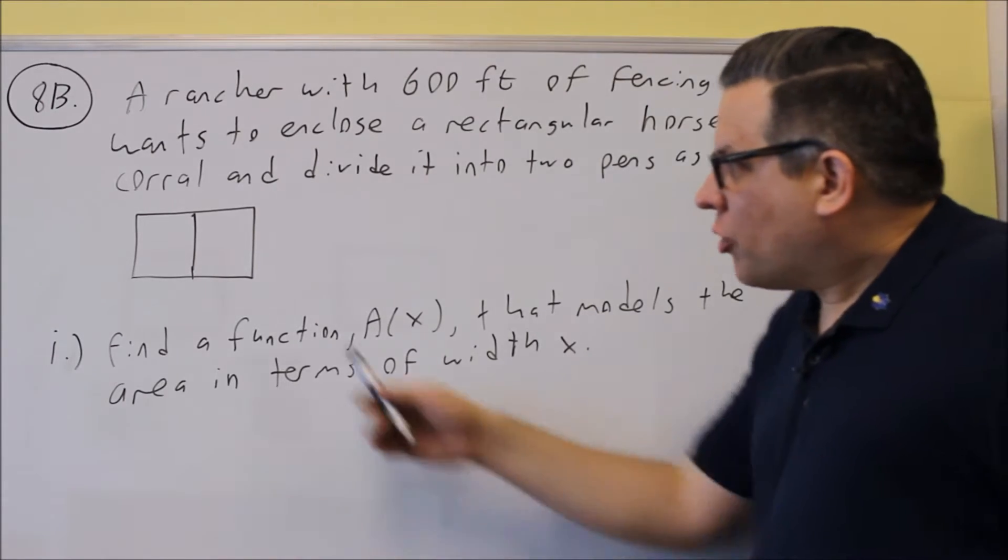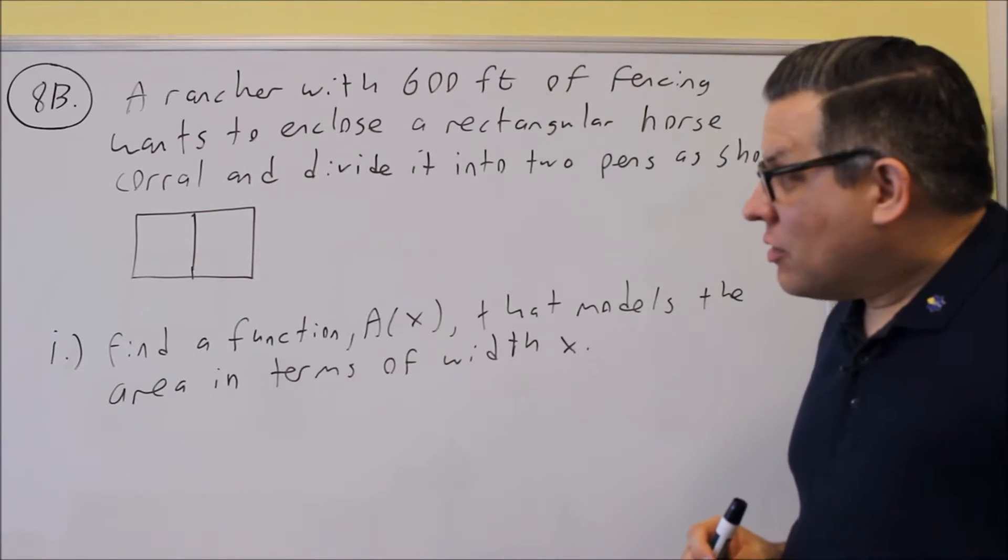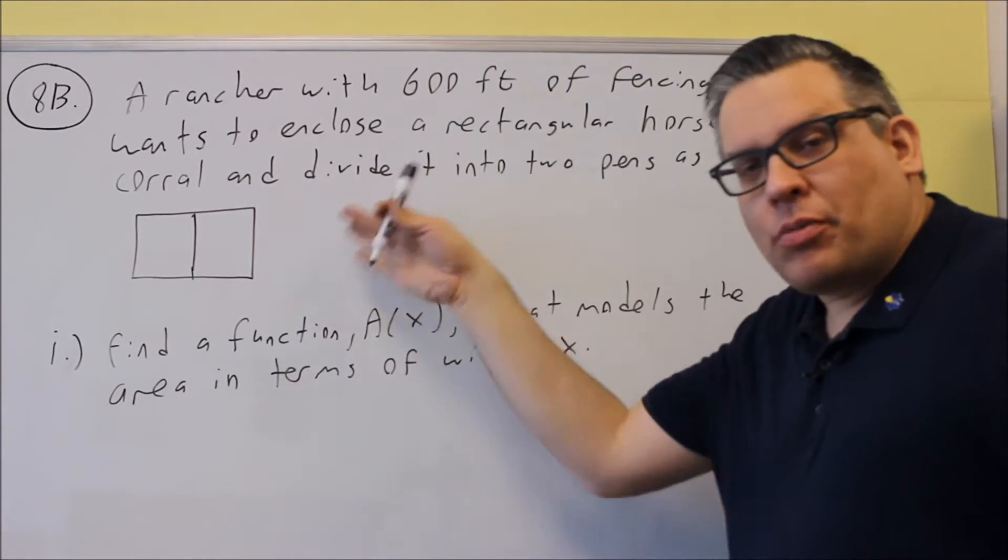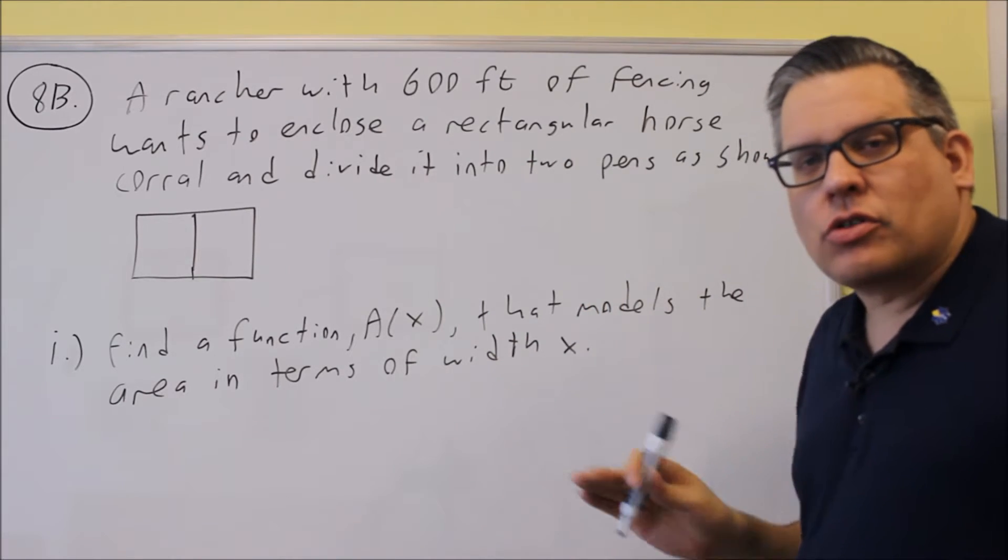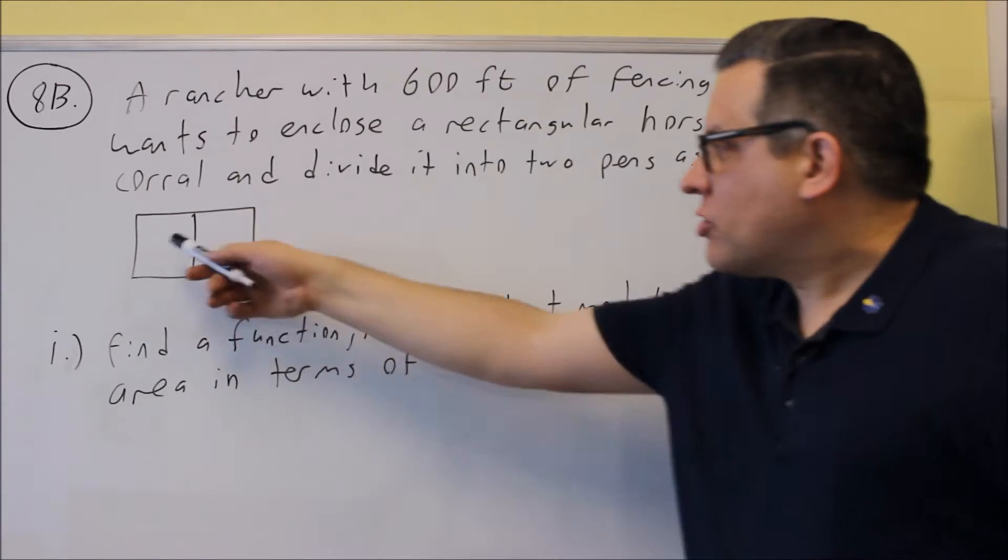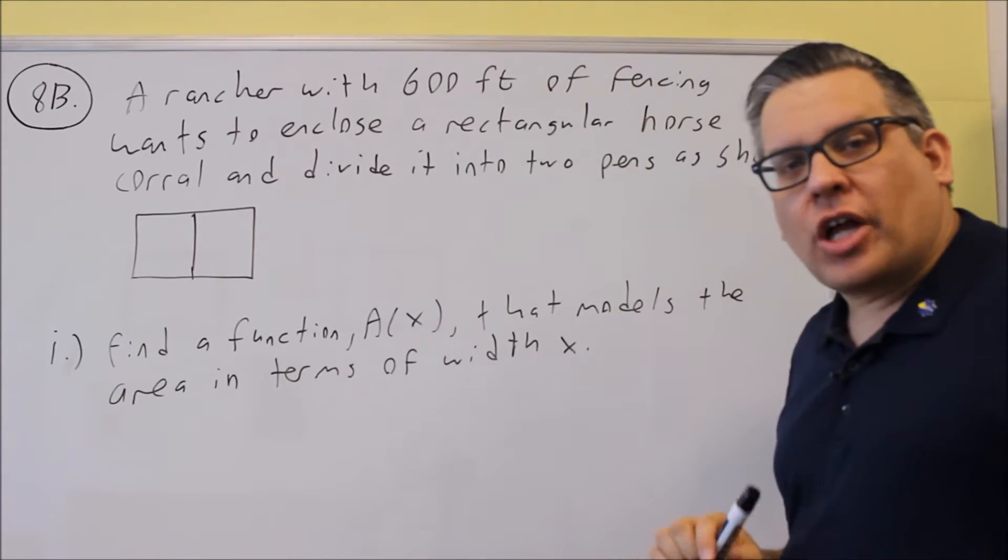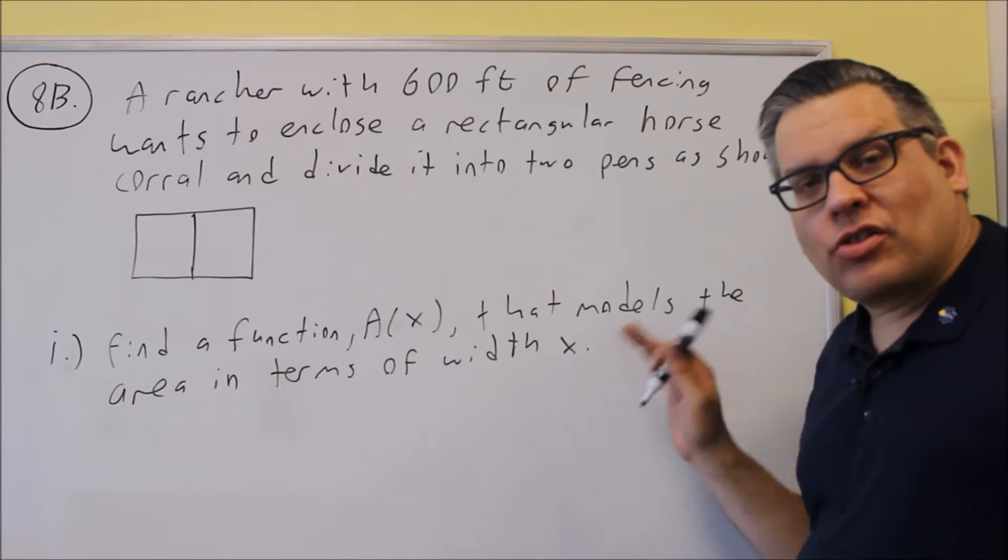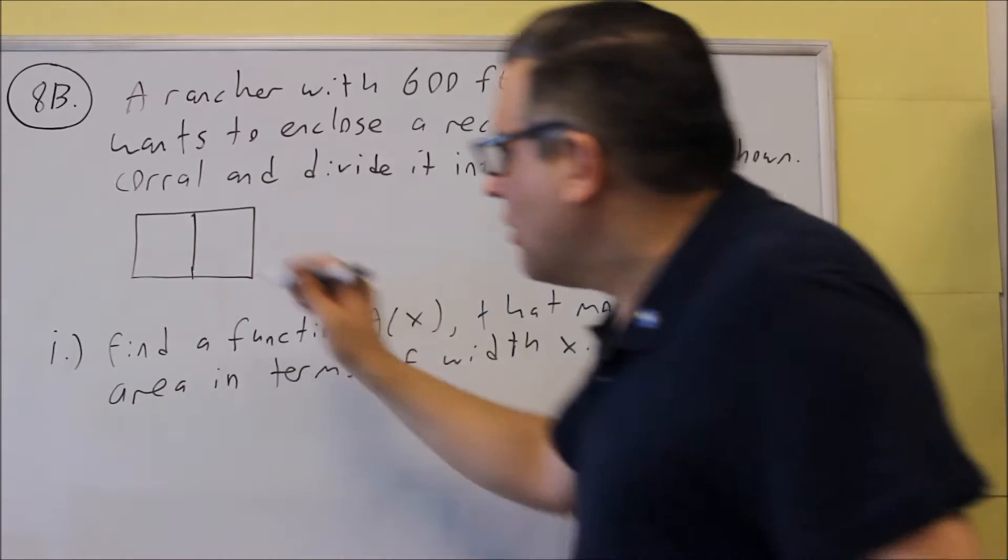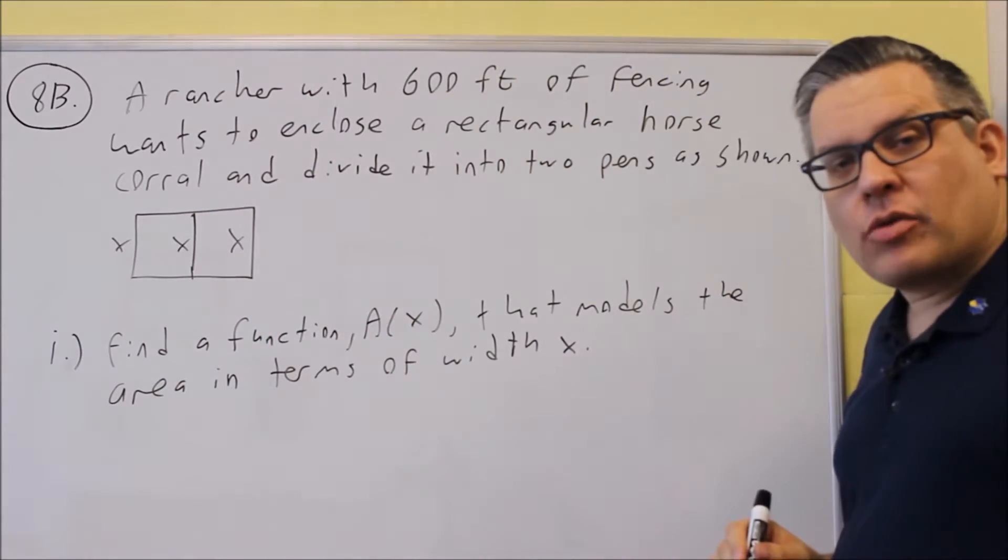So for this, what we're going to do is we're going to label our picture that's given here. For this particular one, we have two pens, but you could have three pens or four pens, doesn't matter. We're still going to do it the same way. Any kind of vertical line you see, all of them you're going to label with x, because x is the width. So let's put x's down on our picture.